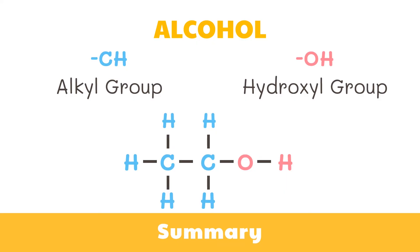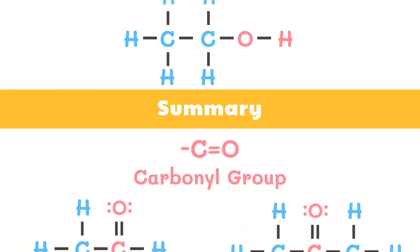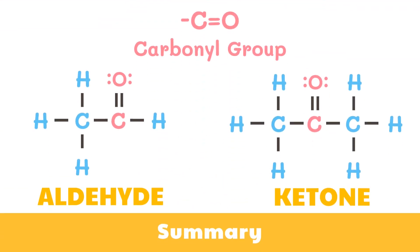Now, let's wrap things up. An alcohol molecule consists of two parts: the first one has the alkyl group, and the other has the hydroxyl group. Aldehydes and ketones contain the carbonyl group. In aldehydes, the carbonyl group is located at the terminal end of the molecule. Whereas, in ketones, the carbonyl group is located anywhere between the two terminal ends of the molecule.